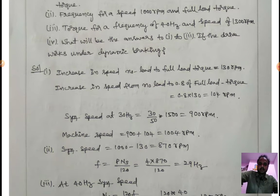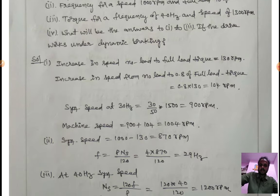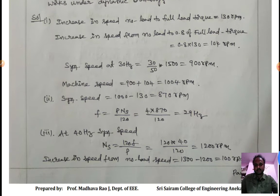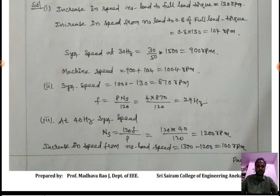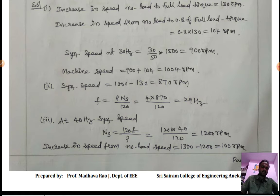Increase in speed from no load to full load torque is 130 rpm. Increase in speed from no load to 0.8 of full load torque equals 0.8 × 130 = 104 rpm. Synchronous speed at 30 Hz: Ns = 30 × 1500/50 = 900 rpm. Motor speed = 900 + 104 = 1004 rpm. For part two: 1000 − 130 = 870 rpm, and frequency is found using Ns = 120f/P.